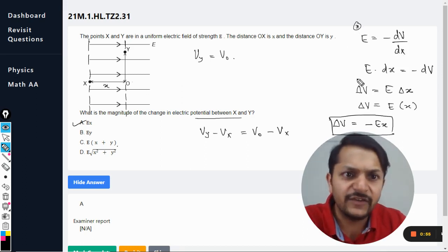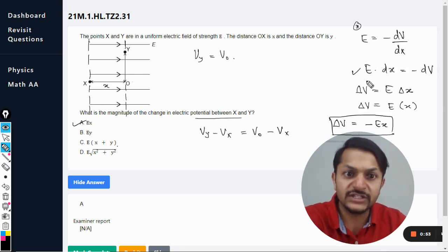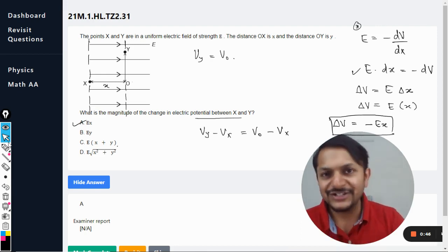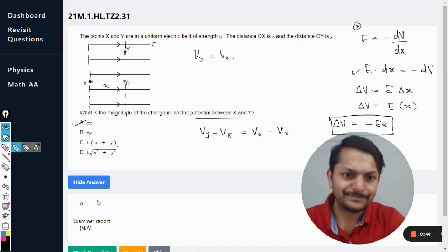And then this E is equal to minus dV by dx. This might be a new formula for many of the students, but anyways if you know a bit of calculus you can do this and delta V is equal to minus Ex. So this is how we do this question. All the best, bye.